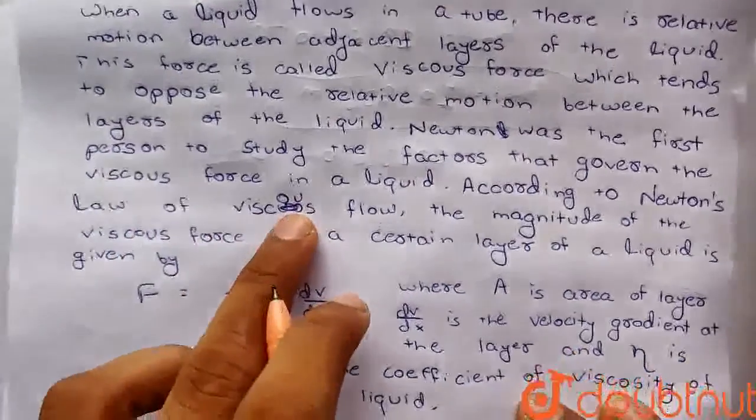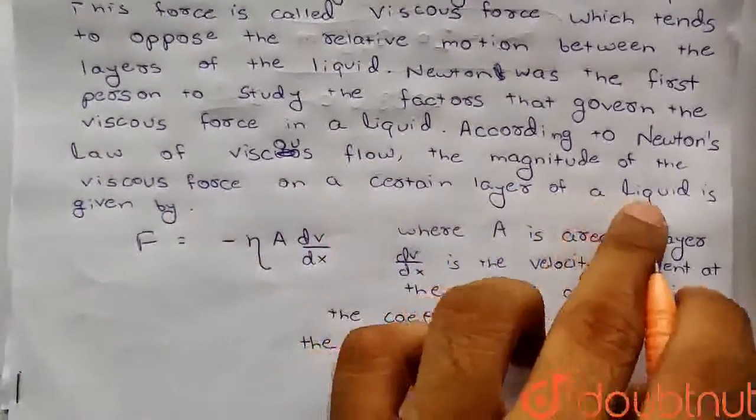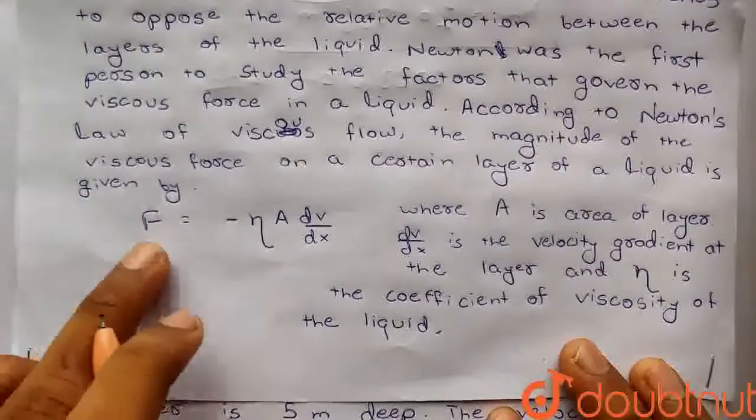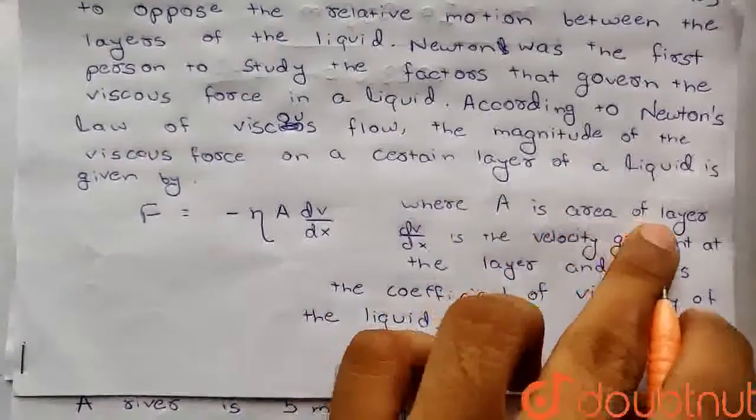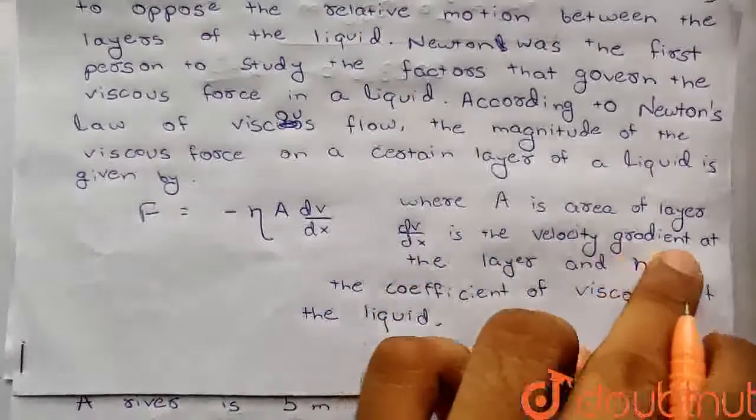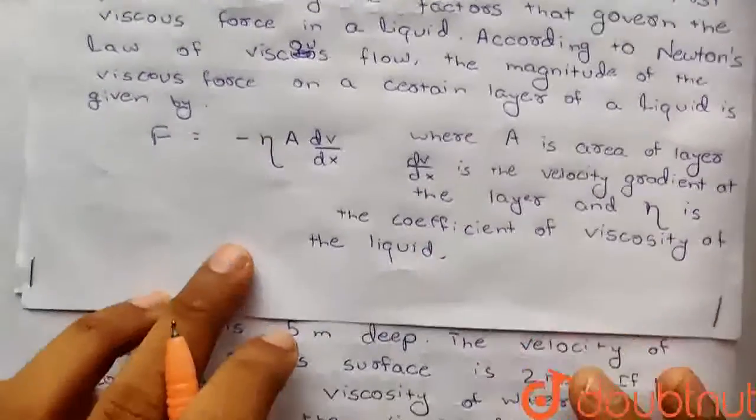According to Newton's law of viscous flow, the magnitude of the viscous force of a certain layer of a liquid is given by F equals minus eta A dV by dx, where A is area of layer, dV by dx is velocity gradient at the layer, and eta is coefficient of viscosity of the liquid.